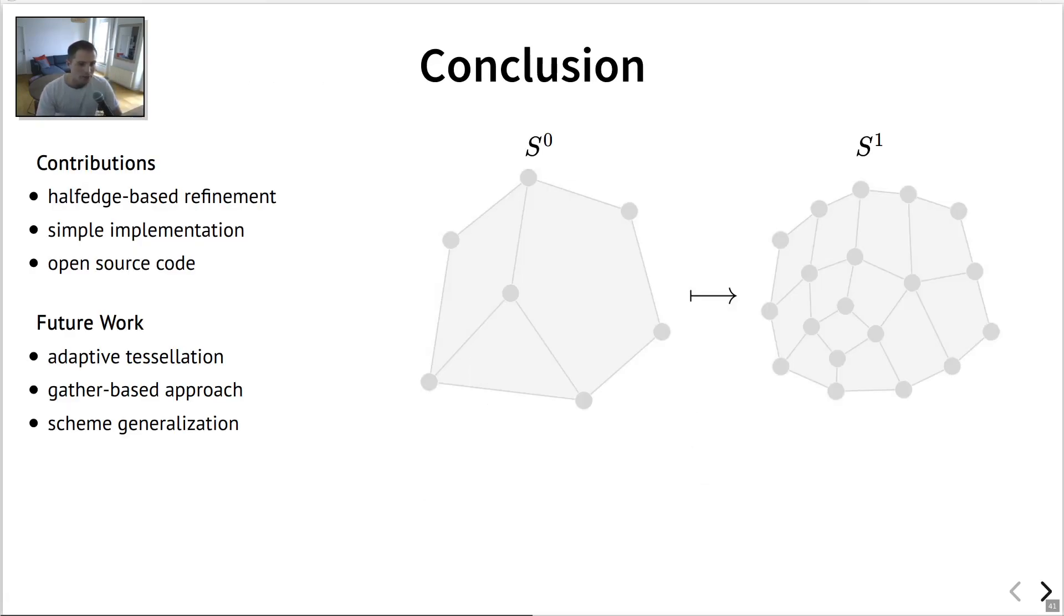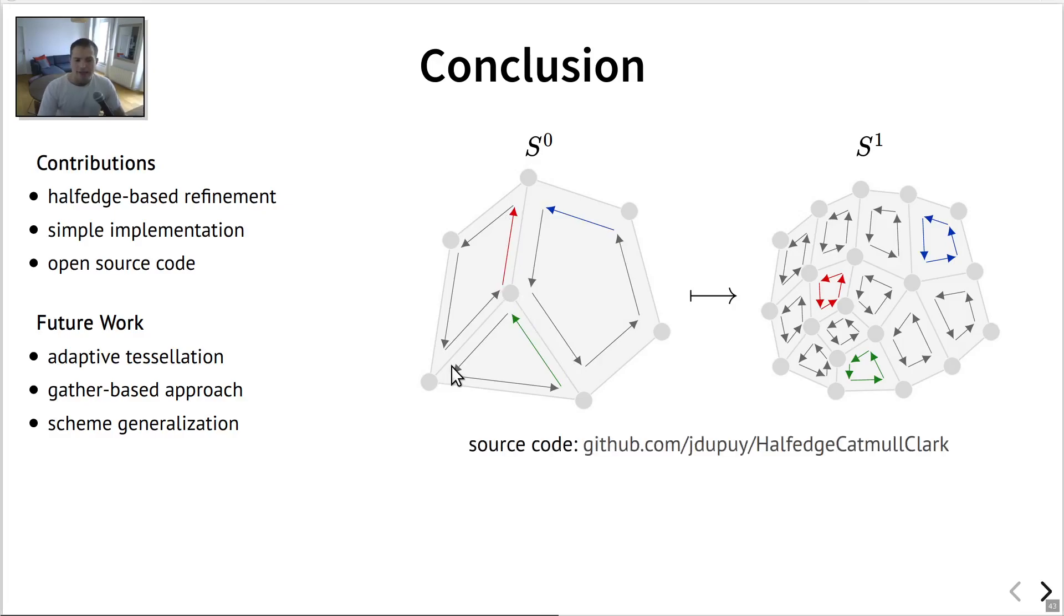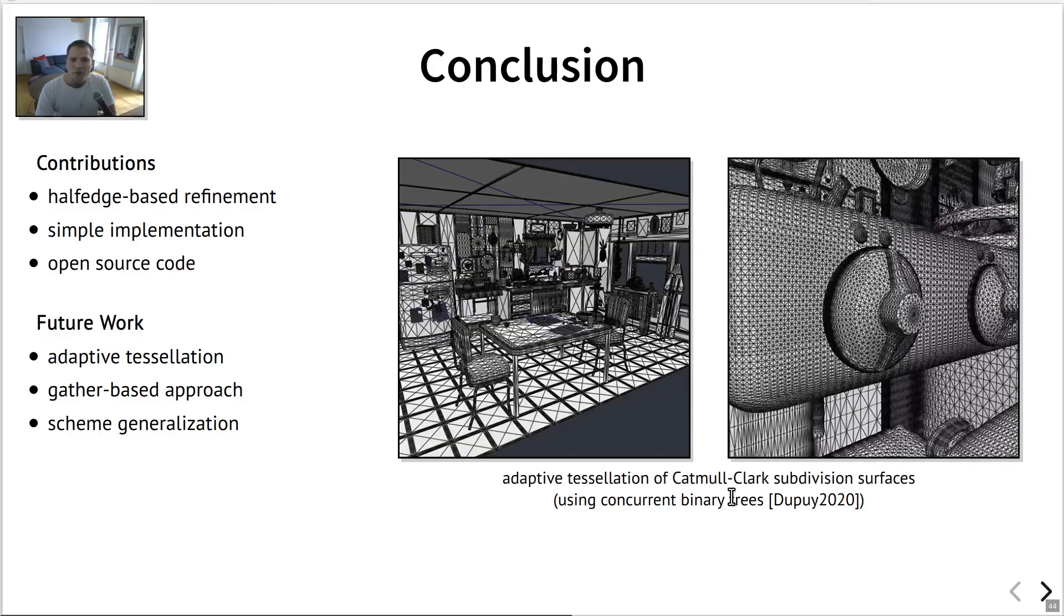So this concludes my talk. Hopefully you guys caught the main insight of our paper. We have these half-edges that multiply by exactly four throughout the refinement of Catmull-Clark. This is always true, even in the presence of non-quad faces. And the actual implementation is really simple. So it's available on my GitHub. It's really a few thousand lines of C code for the CPU implementation. And I think it's roughly a thousand lines of GLSL code for the GLSL implementation.